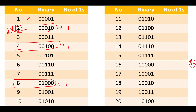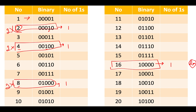Proceeding further, performing the left shift operation on 4 gives us 8, and again the number of ones remains the same — which is 1. Performing left shift on 8 gives us 16, and again the number of ones remains the same. So whenever we multiply a number by 2, the number of ones in the resulting number remains unchanged.